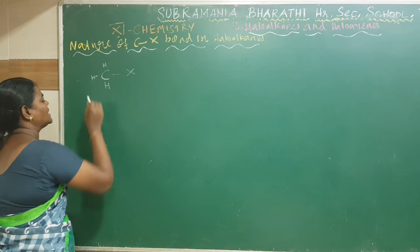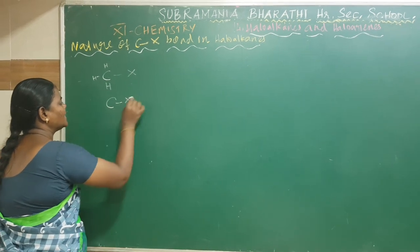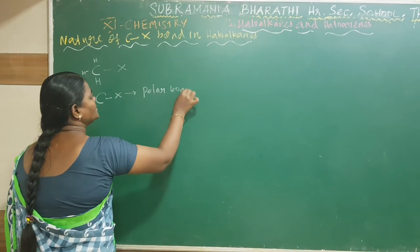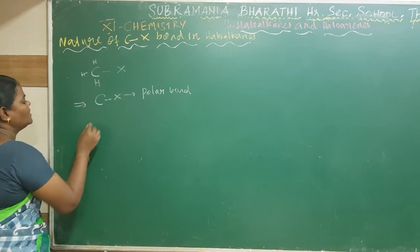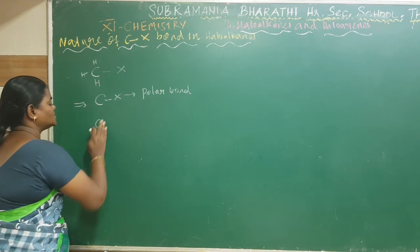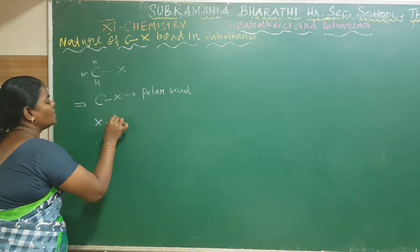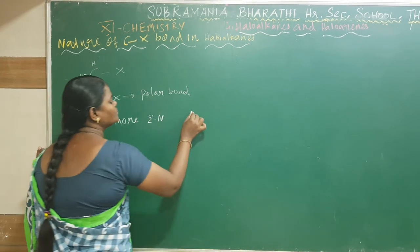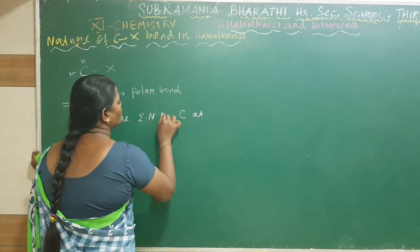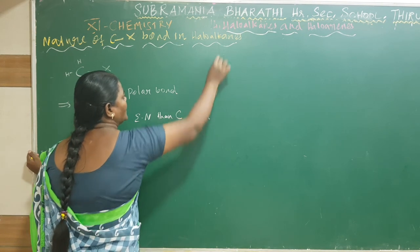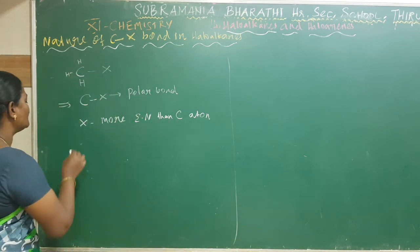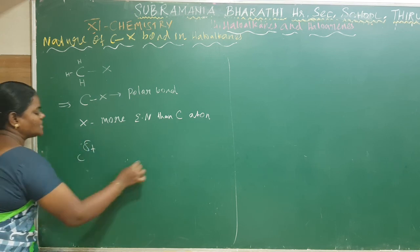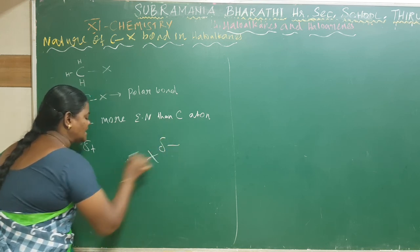The carbon-halogen bond is a polar bond. In this polar bond, halogens have a more electronegative atom compared to the carbon atom. So the carbon atom carries a partially positive charge and the halogen atom carries a partially negative charge.